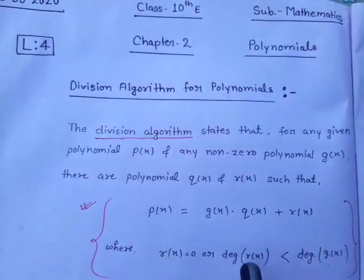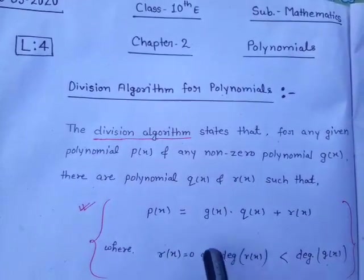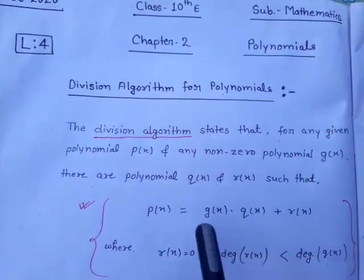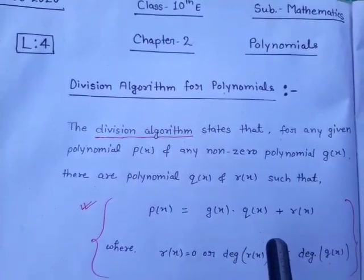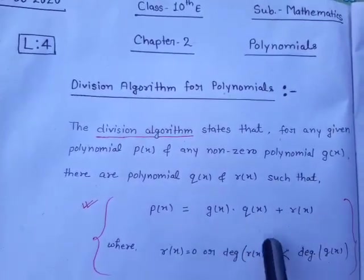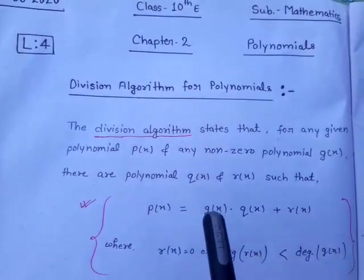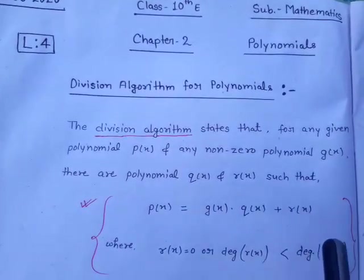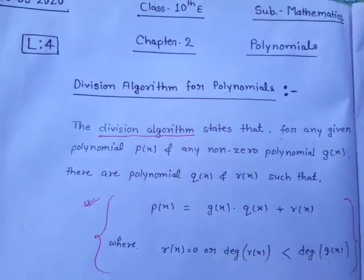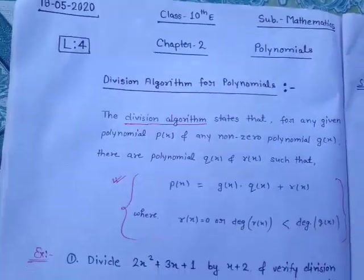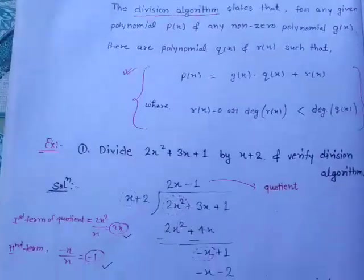If either of these conditions occurs, the process will be stopped. This is the same as chapter one's Euclidean division lemma: a = bq + r. Now using this you can solve some questions.